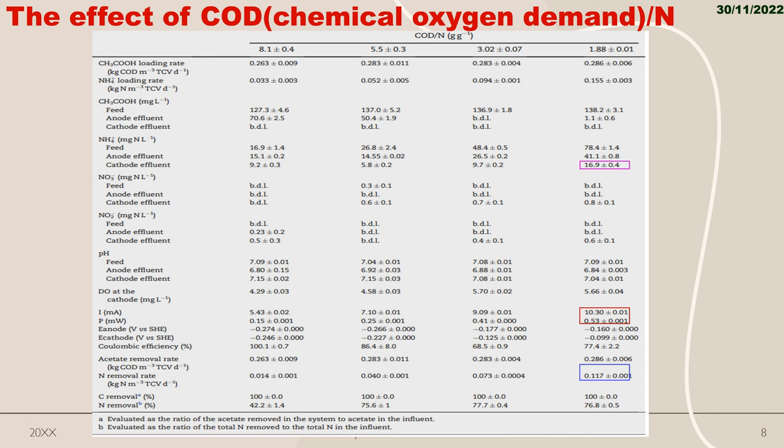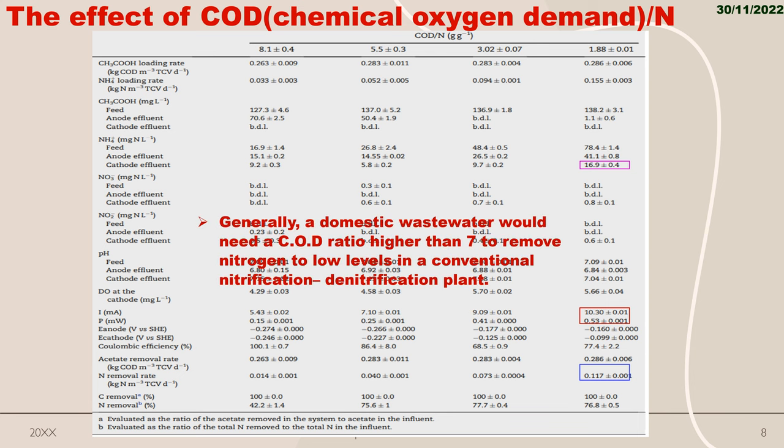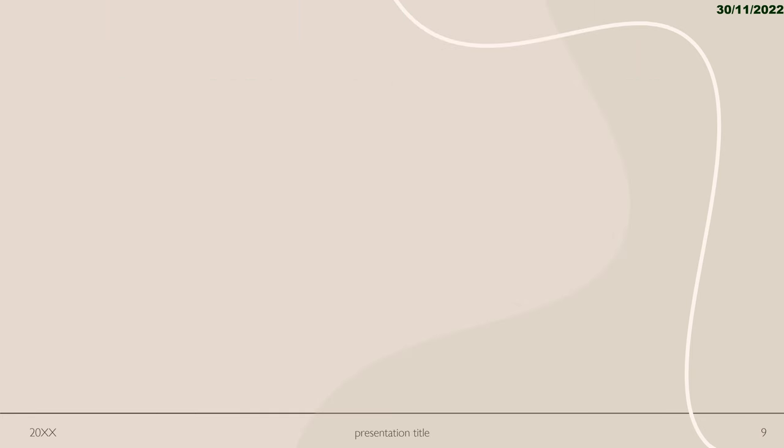In contrast to low COD, higher COD ratios allow optimal removal of nitrogen and carbon. Generally, a domestic wastewater would need a COD ratio higher than 7 to remove nitrogen to low levels in a conventional nitrification or denitrification plant.